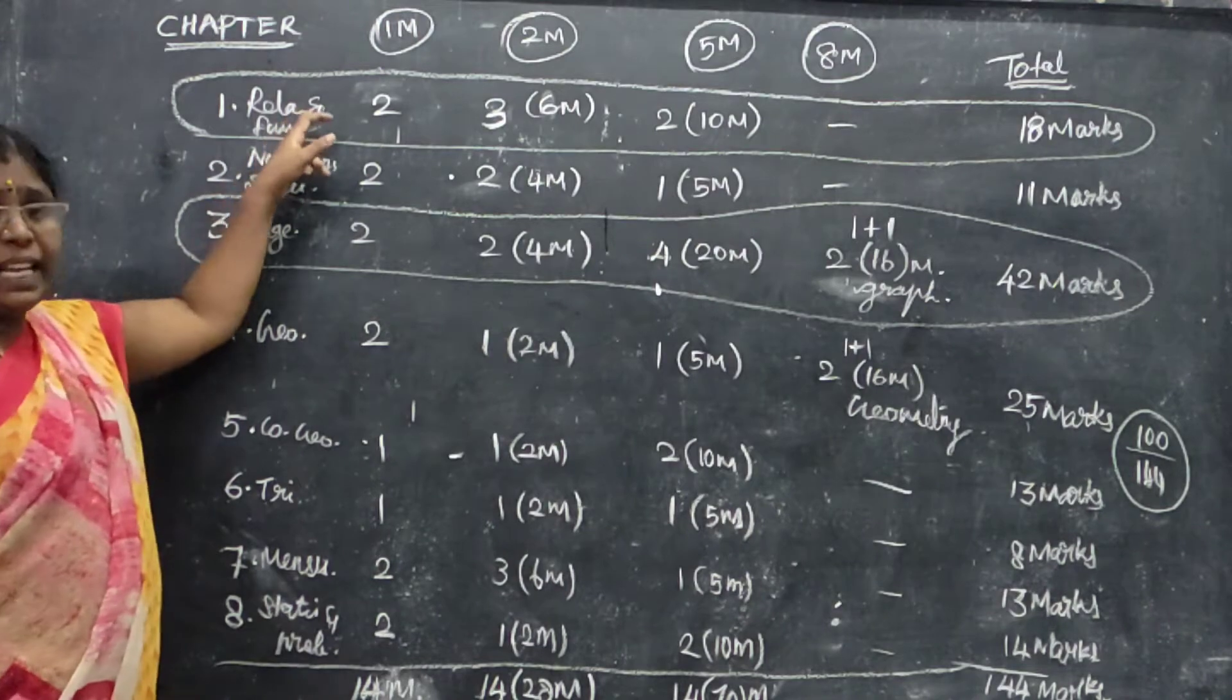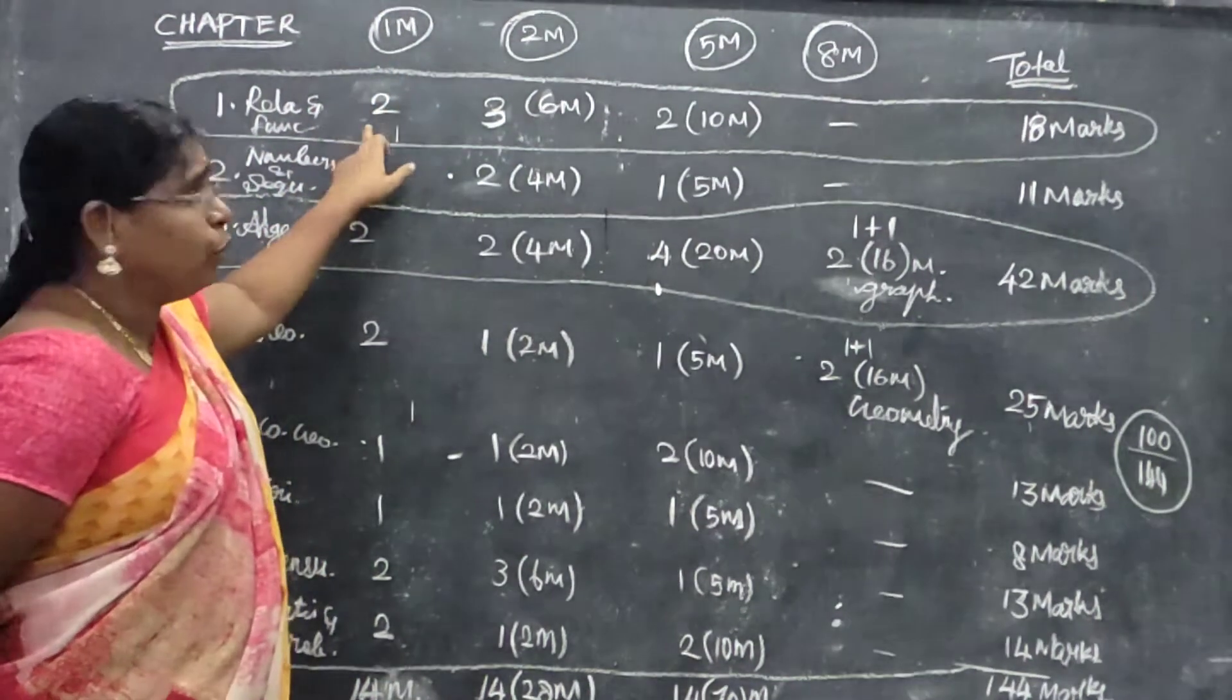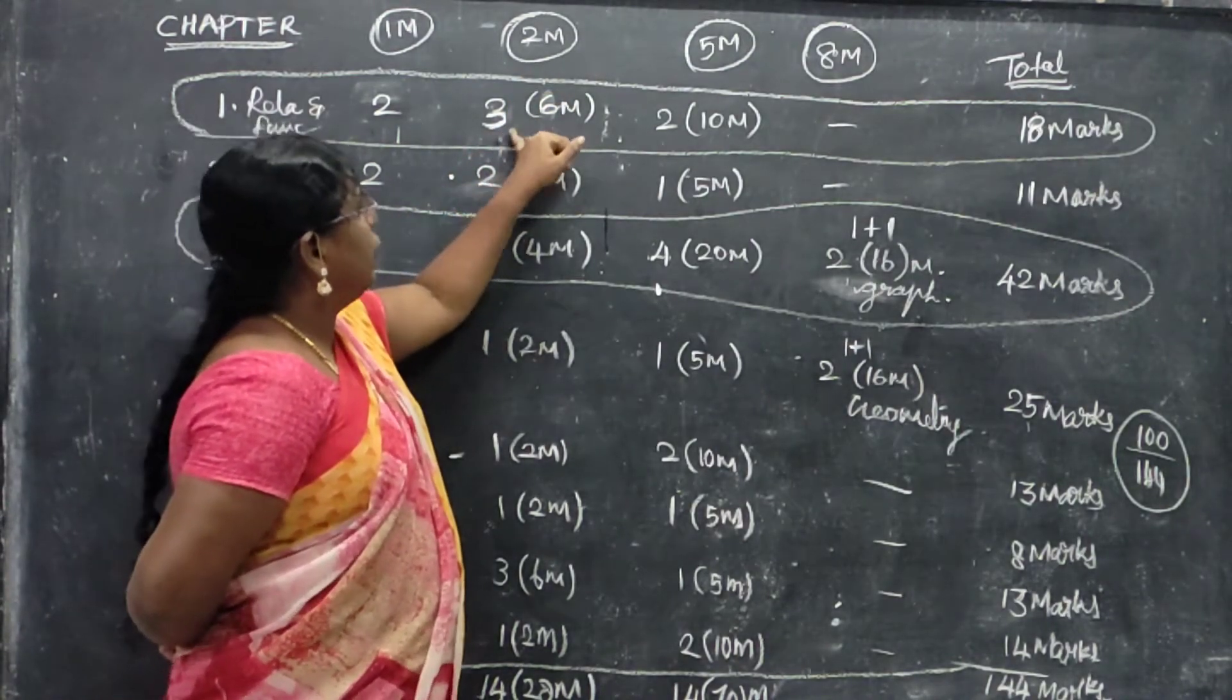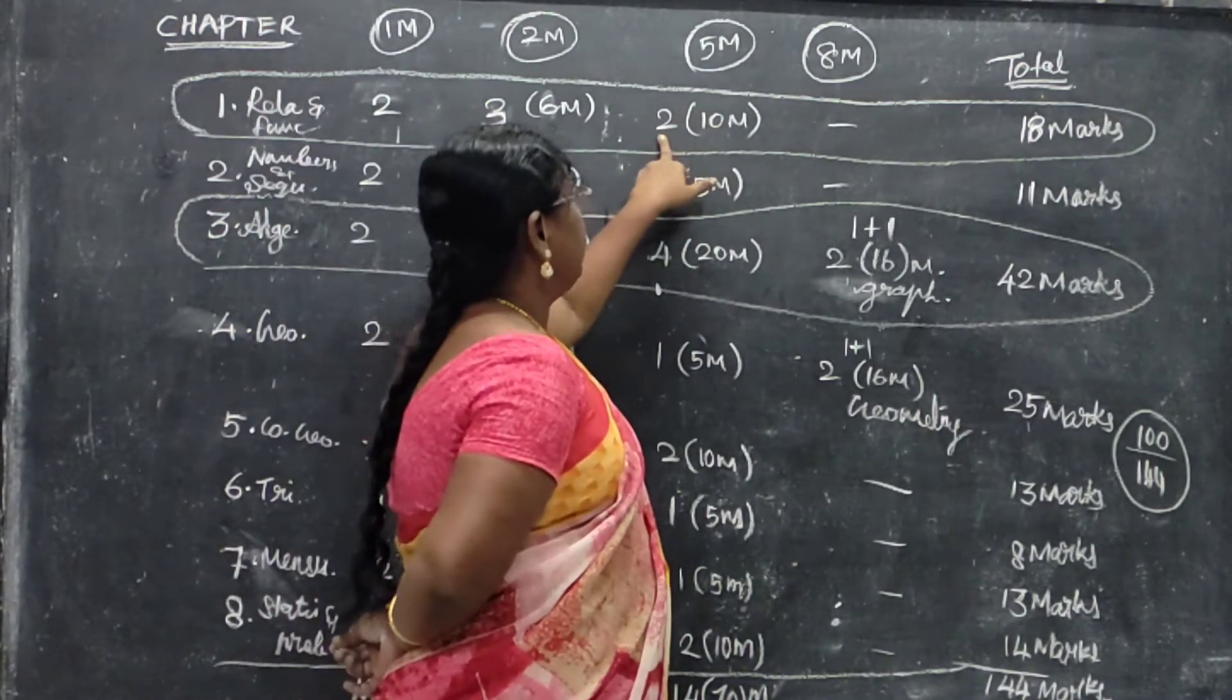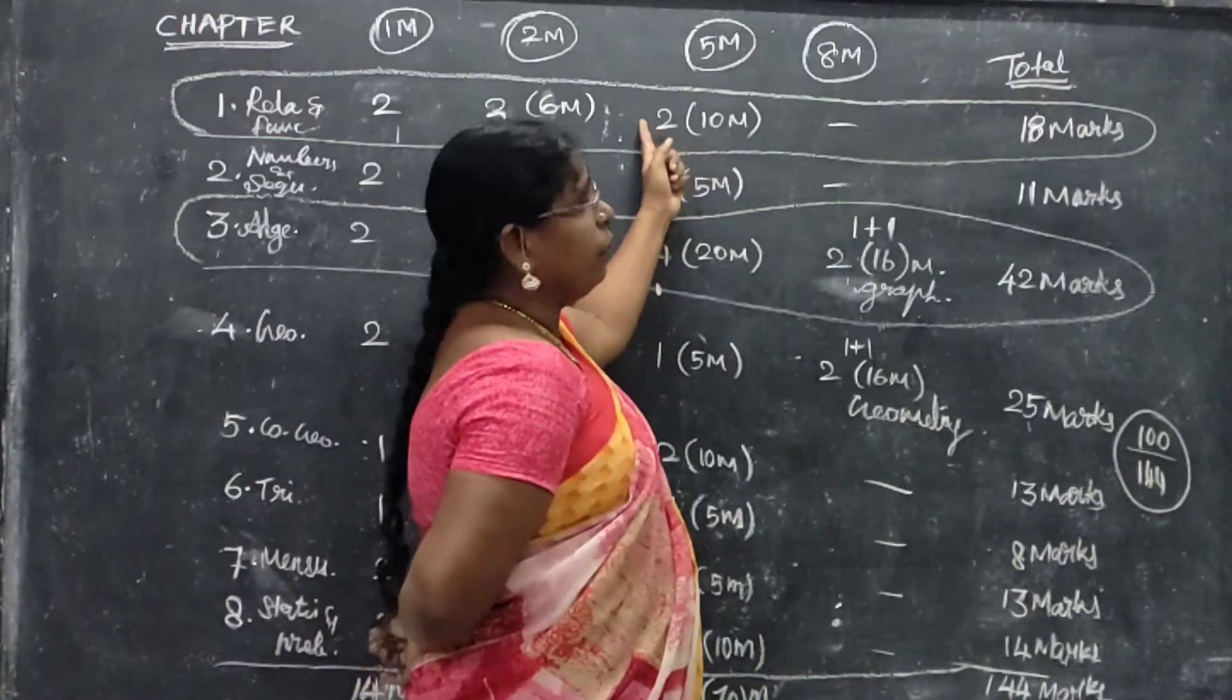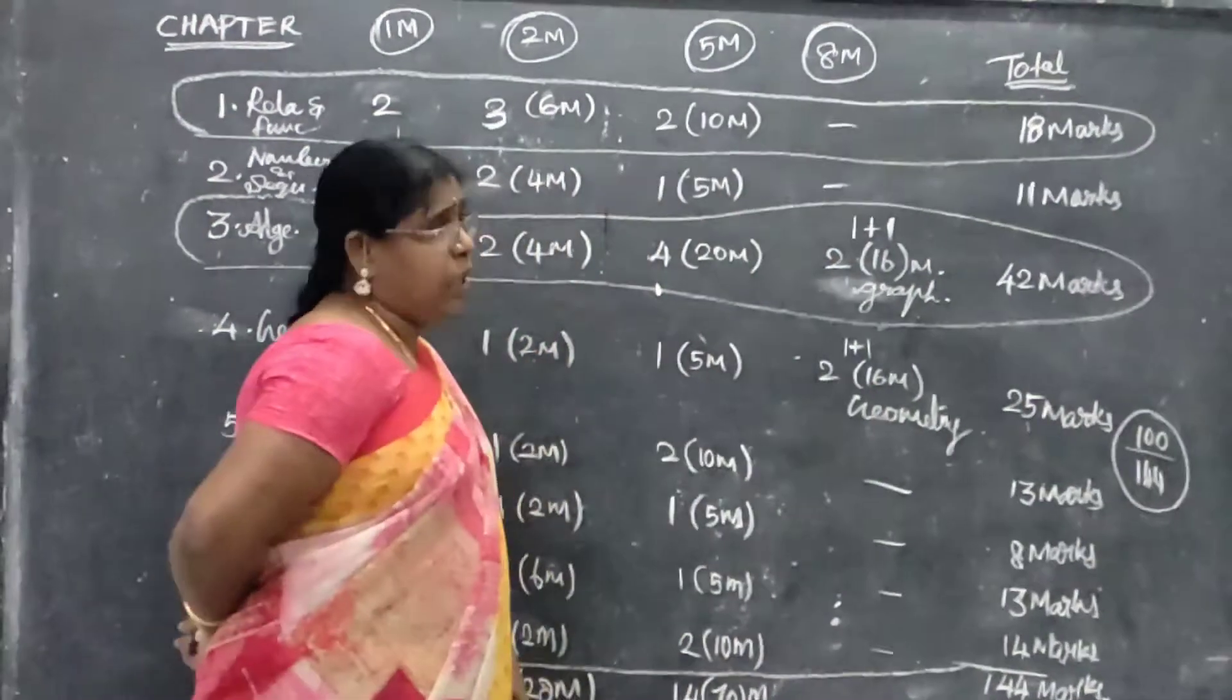First, Chapter 1 is Relations and Functions. 1 mark is 2, 1 mark 2 mark is 3, 2 mark 3, 2 mark 3, 2 mark 6 mark 5 mark is 2, 5 mark 2, 5 mark is 10 mark 2, 5 mark is 8 mark. First chapter 1 is 18 marks.